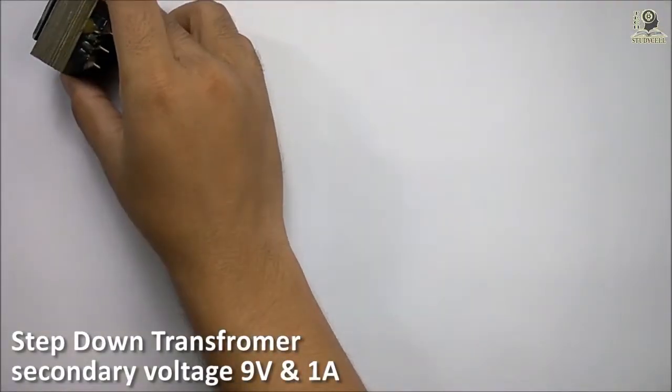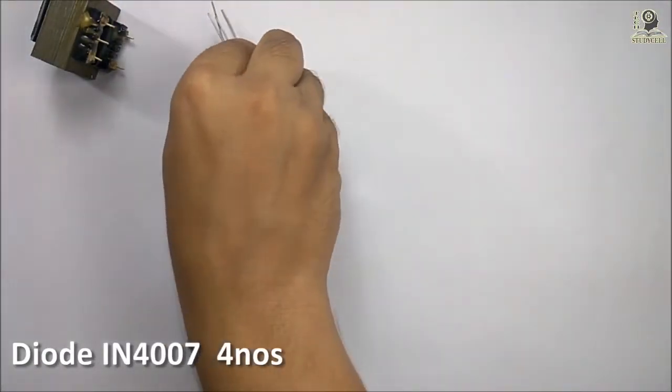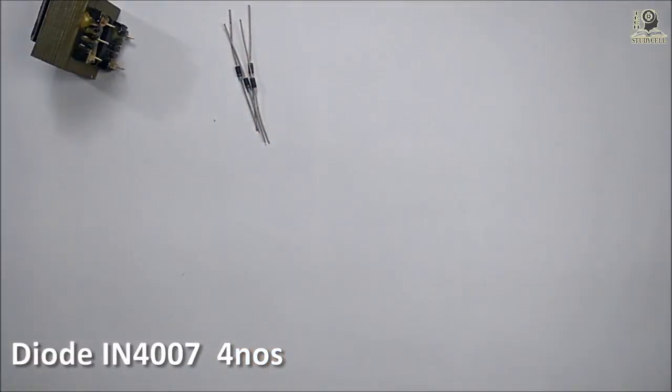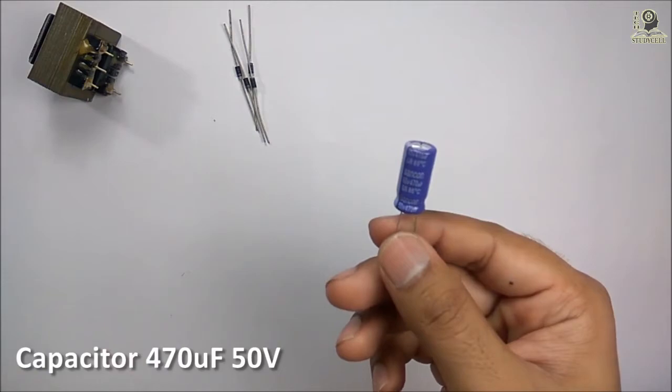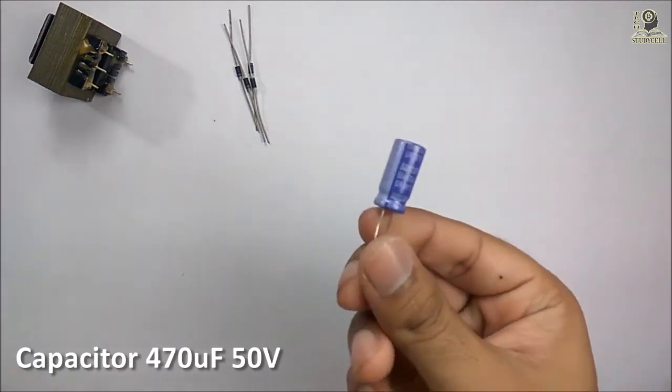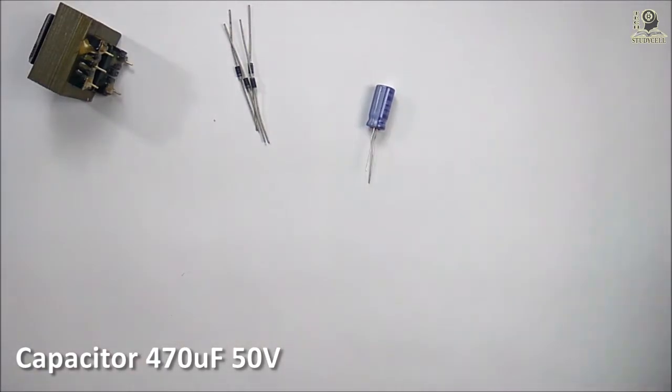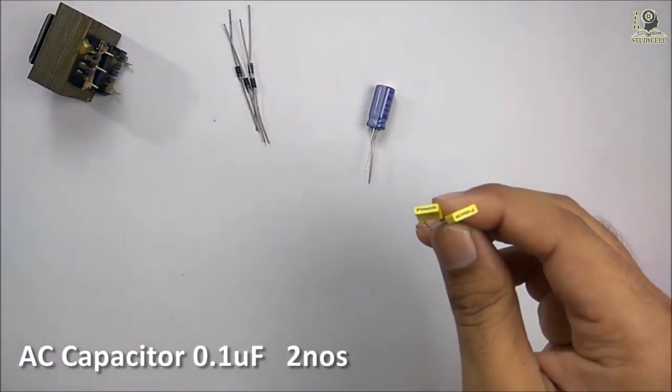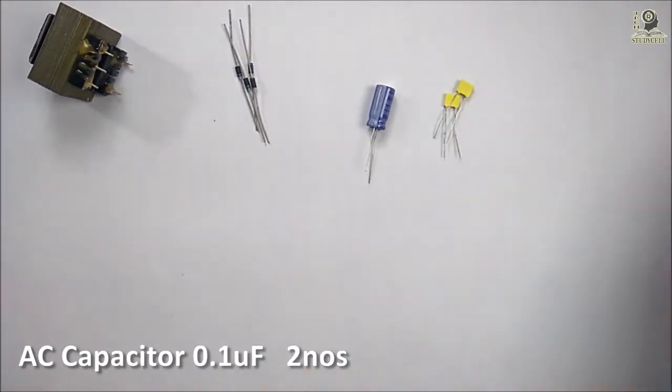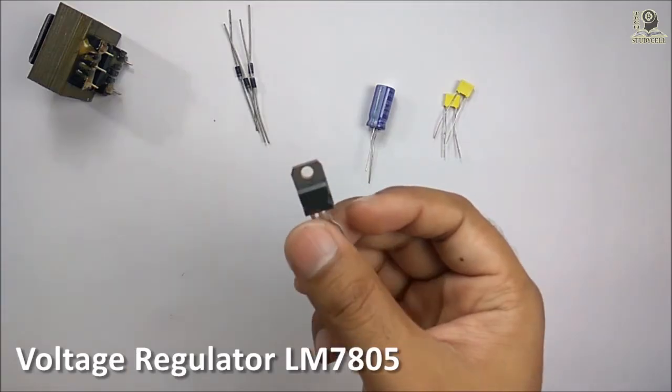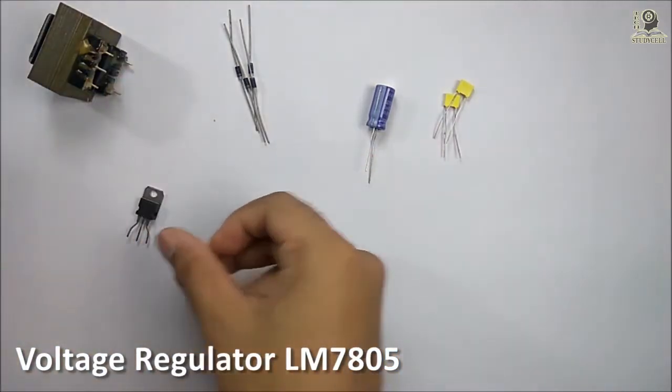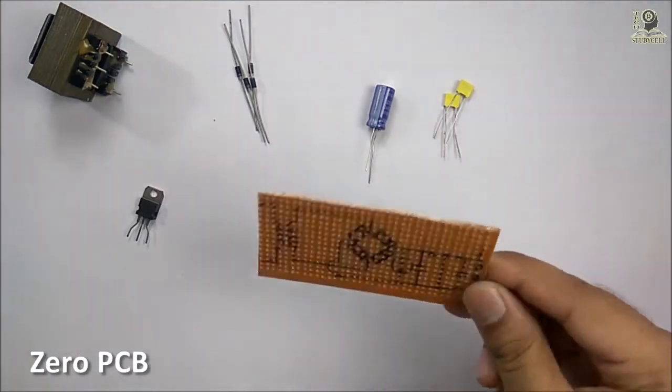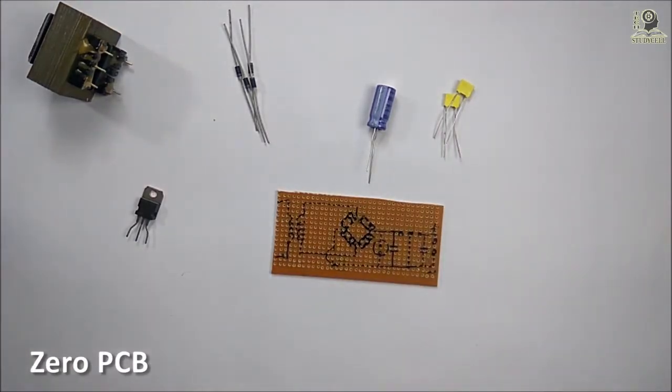We will require a step-down transformer, 4 diodes to rectify the supply, an electrolytic capacitor of 470uF and 50V, 2 AC capacitors of 0.1uF, 1 LM7805 IC, and a piece of zero PCB. So let's get started.